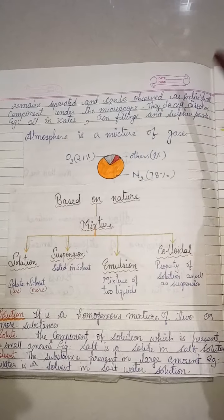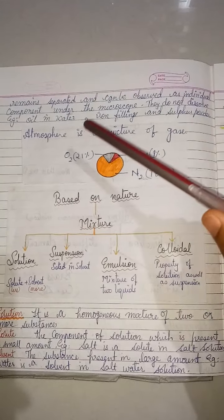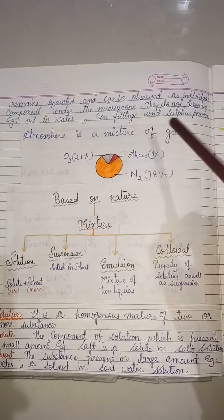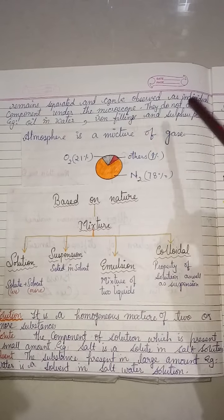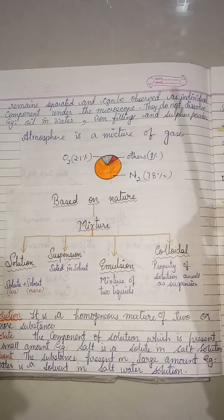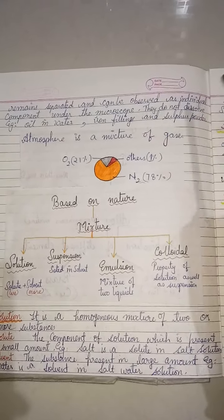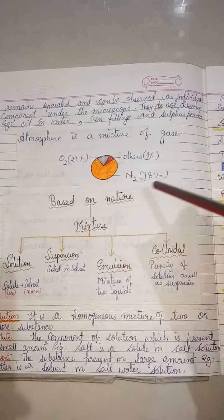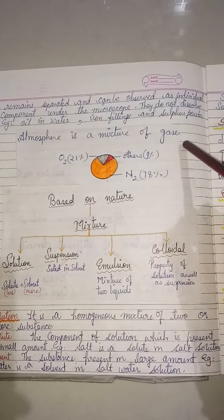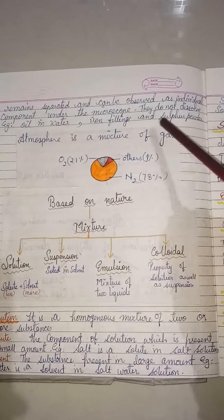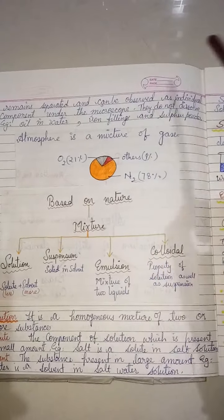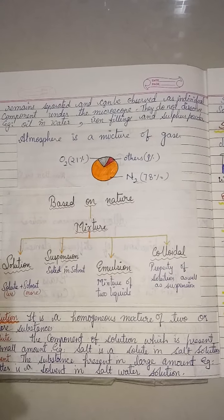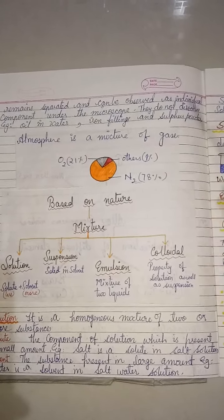In heterogeneous mixtures, each component can be observed as an individual component. For example, oil in water, iron filings and sulfur powder — you can see both separately. Similarly, our atmosphere is also a mixture of gases: 21% oxygen, 78% nitrogen, and 1% other gases.